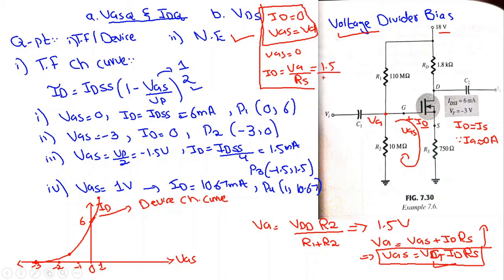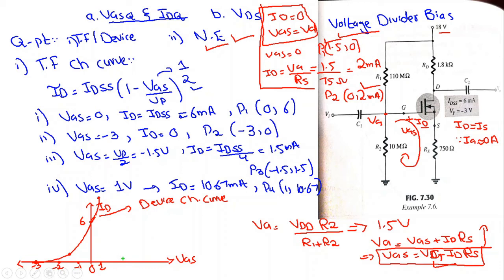With VG = 1.5V and RS = 750Ω, ID = VG/RS = 1.5/750 = 2 mA. So point P1 is (VGS = 1.5V, ID = 0) and point P2 is (VGS = 0, ID = 2 mA). On the graph, 1.5V is marked on the x-axis near the 1V and 2V marks.